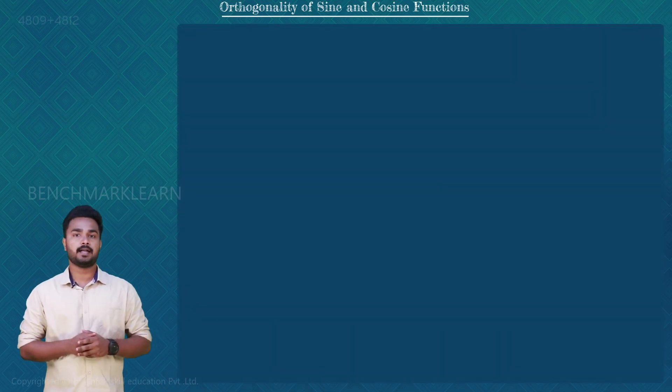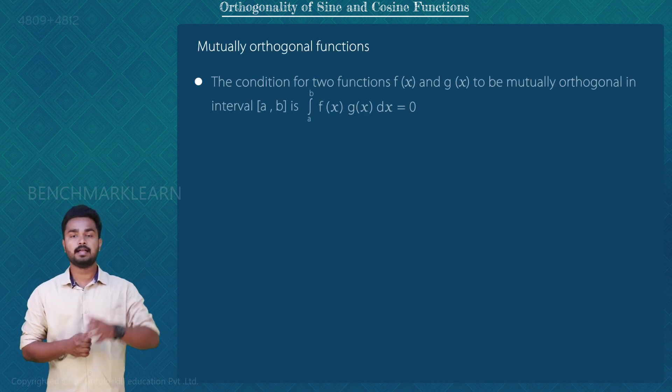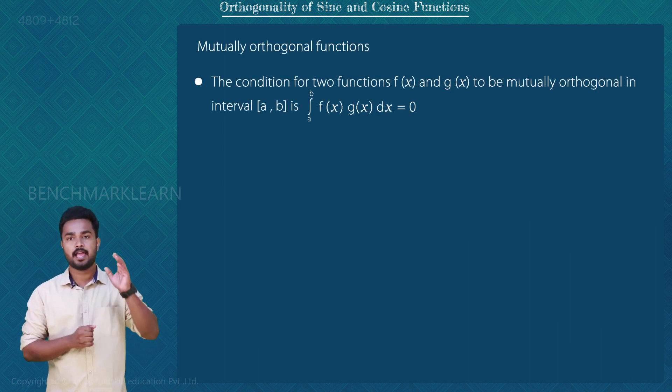This can be attained using mutually orthogonal functions. The condition for two functions, f(x) and g(x) to be mutually orthogonal in closed interval [a, b] is integral from a to b, f(x) g(x) dx = 0.